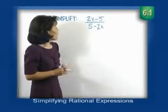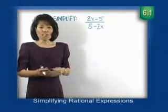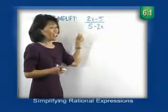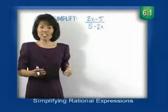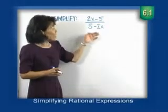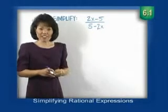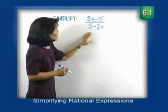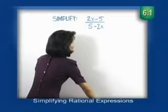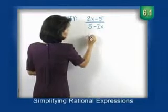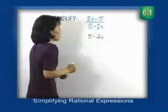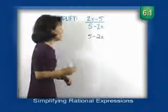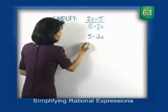2x minus 5, 5 minus 2x. What can I divide out? Certainly don't do that and don't do that because, again, we can only divide out common factors if we have products. So here's what I want you to do. These, notice, kind of differ by just, we'll call it a sign. So if I take this one, 5 minus 2x, and I factor out a negative 1, let's see what happens.